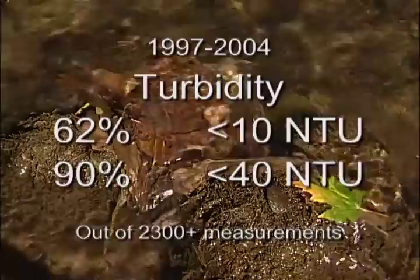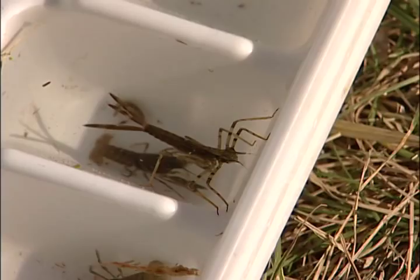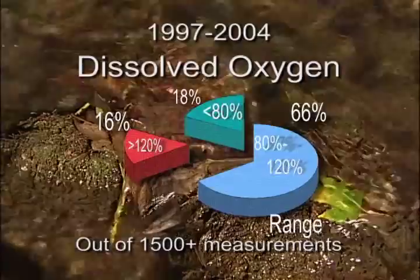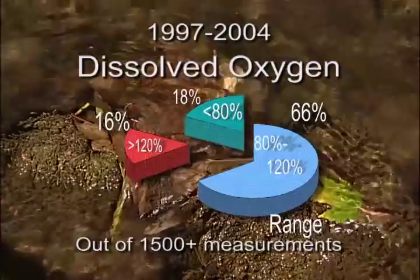Temperature and dissolved oxygen are directly linked. At certain water temperatures, a certain amount of oxygen can be dissolved in the water. The amount of oxygen dissolved in the stream can be measured in percent saturation. Generally, fish and macroinvertebrates are healthy when saturation of dissolved oxygen is between 80 and 120%. In the WAVE database of over 1,500 samples, dissolved oxygen percent saturation falls between 80 and 120% about 66% of the time, is less than 80% about 18% of the time, and greater than 120% about 16% of the time.